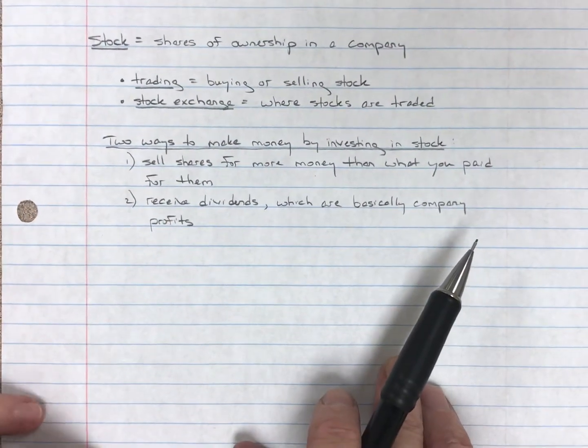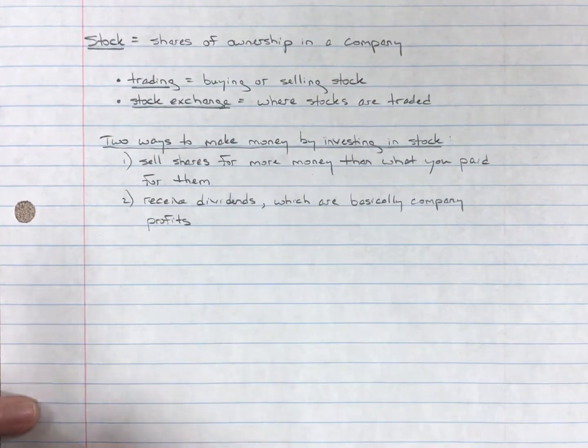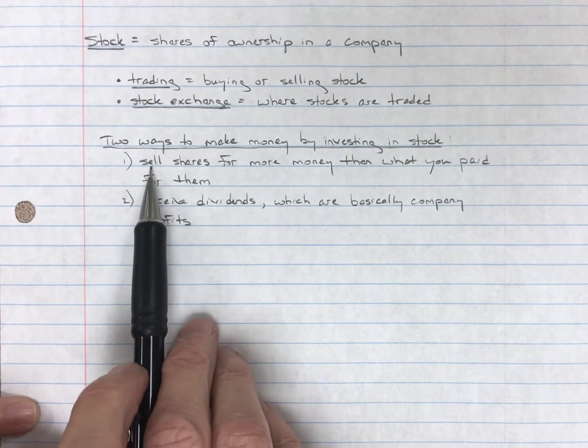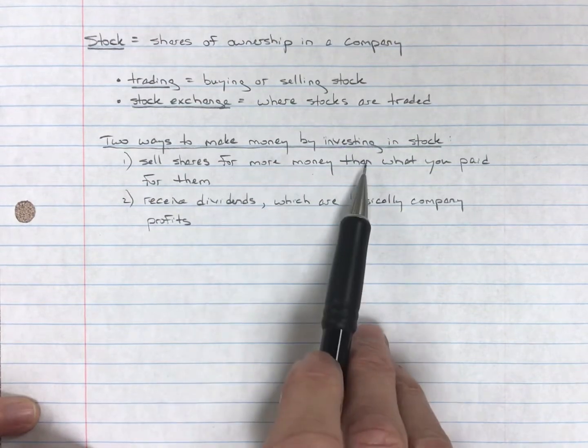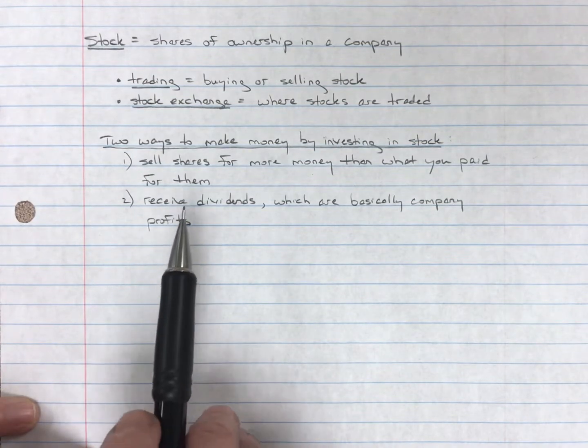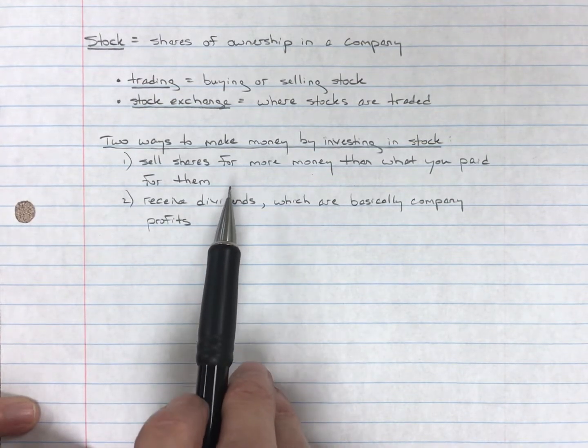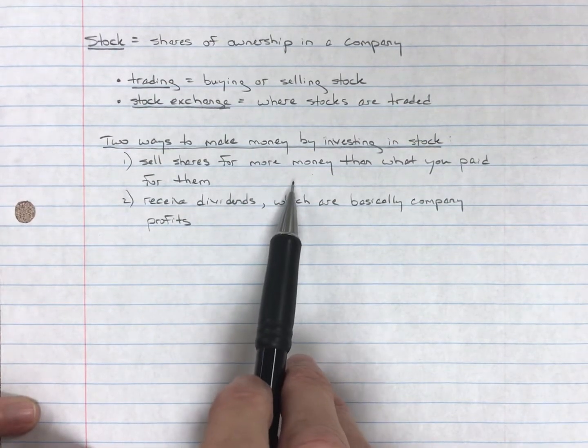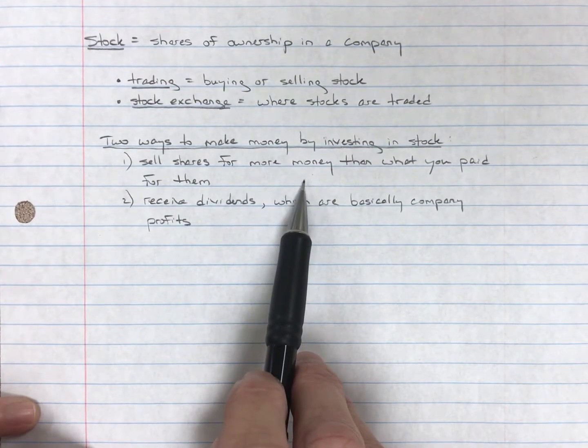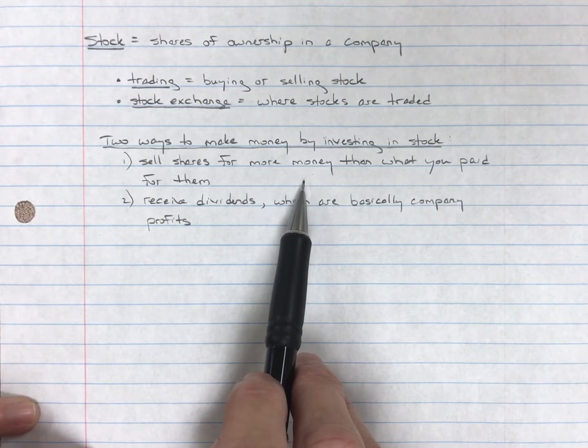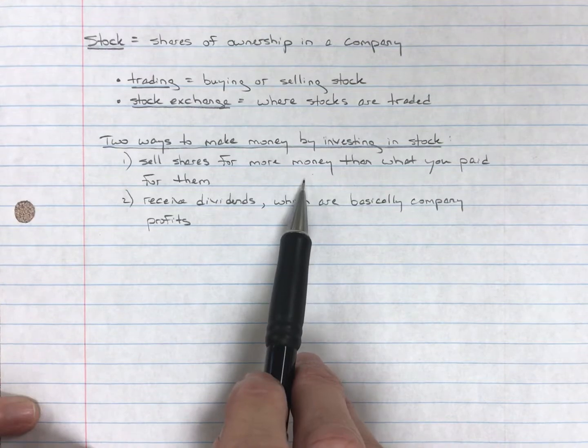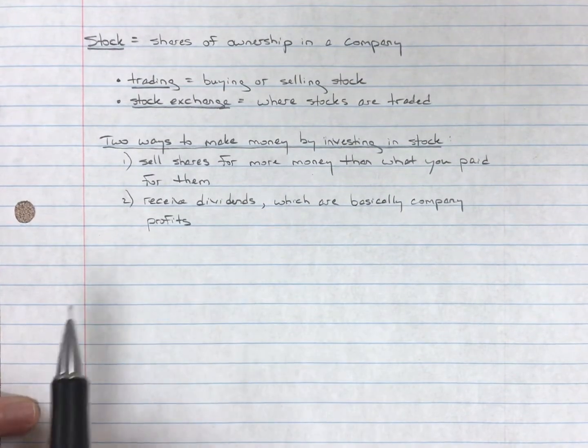Okay, there are two ways to make money by investing in stocks. Number one is if you sell the shares for more money than what you paid for them, you make money. So if you buy one share of Apple stock and that one share cost you $10, and a year later, you sold that share, and that share increased in value to $20, then obviously you just made $10 over the year.